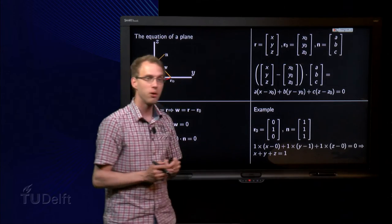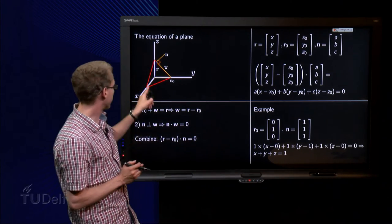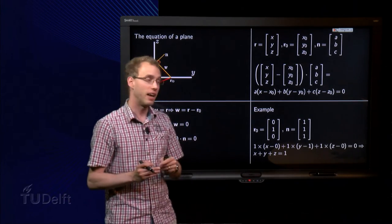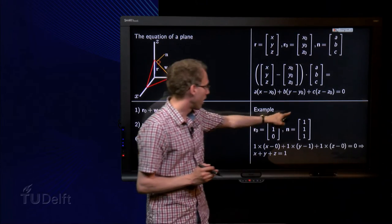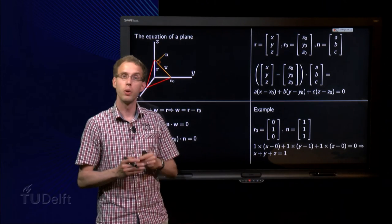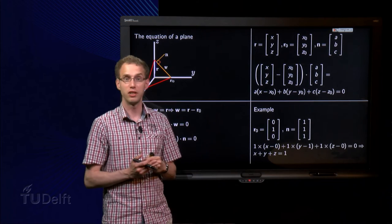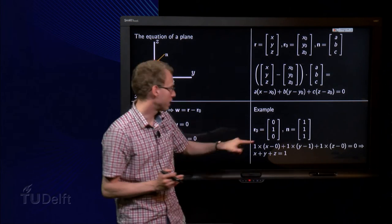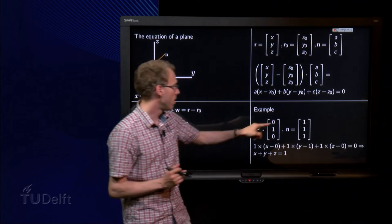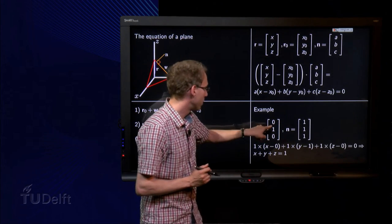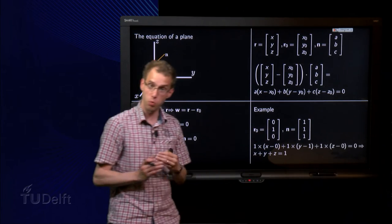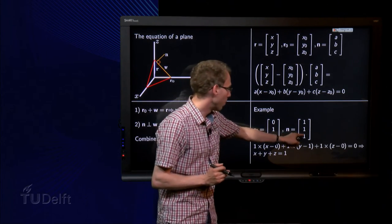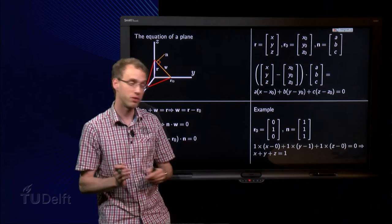If you take r0 equals (0, 1, 0), this one over here, and in this example n, we take (1, 1, 1). What do we get as an equation for our plane? Well, we get a times (x minus x0), which happens to be 0, plus b times (y minus y0), plus 1, plus z equals 0.